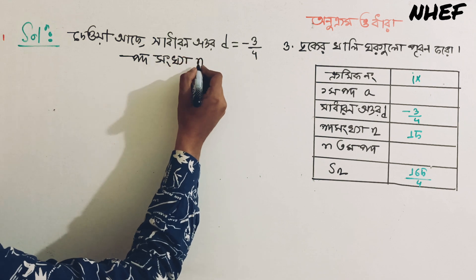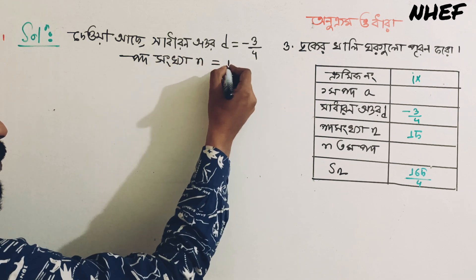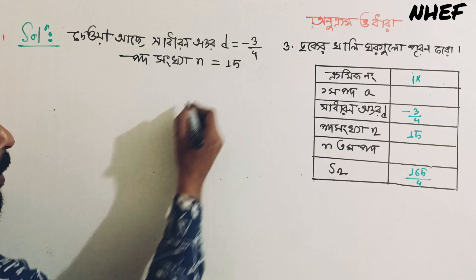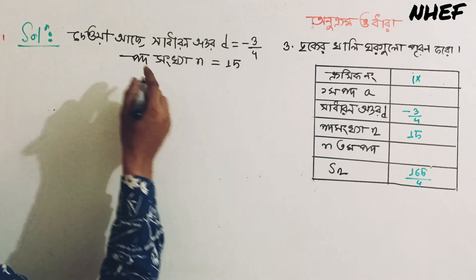n is equal to 15. Among n, the value is 5.